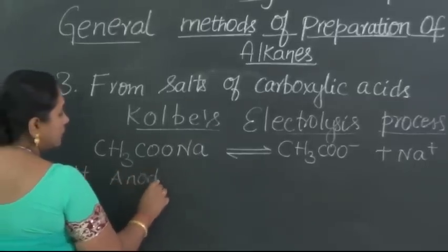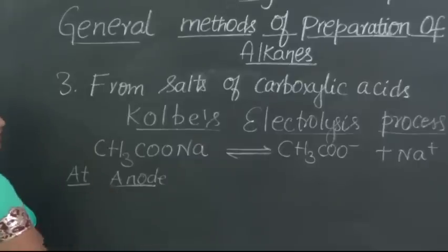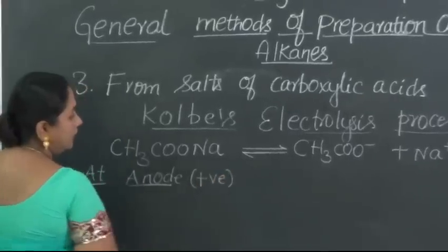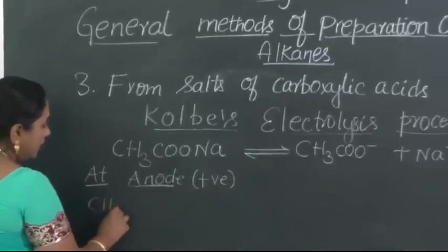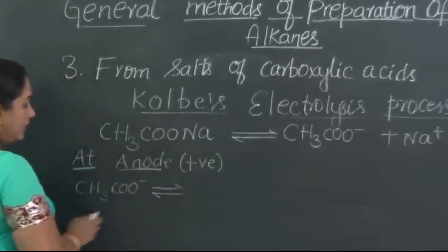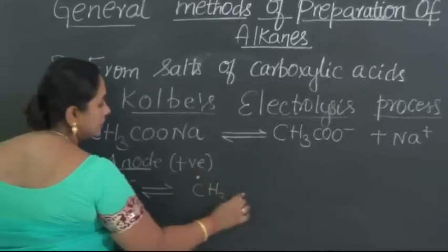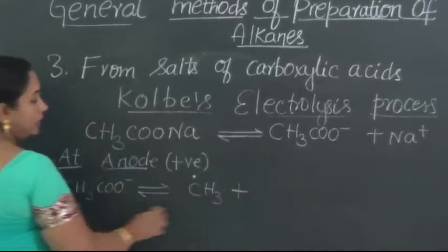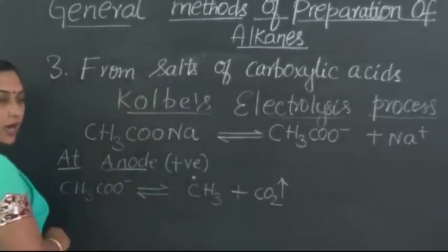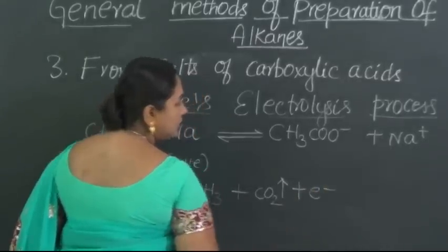At anode, acetate ion, being negatively charged ion, is attracted towards the anode terminal, the positively charged terminal. So, this acetate ion will undergo splitting up here forming methyl free radical. Then, this COO will combine together forming carbon dioxide which is liberated. And the negative charge is because of the excess electron in the process. So, this excess electron is released into the solution.